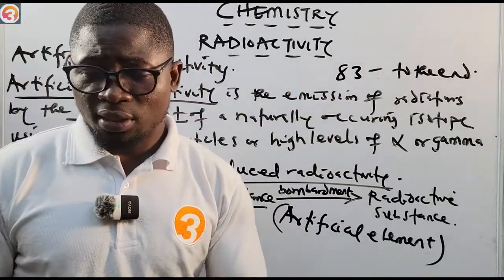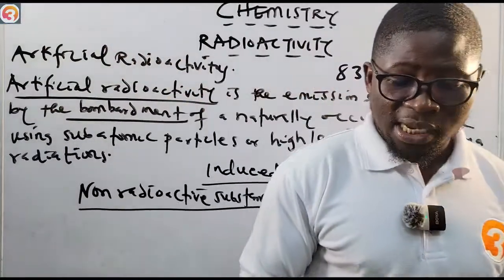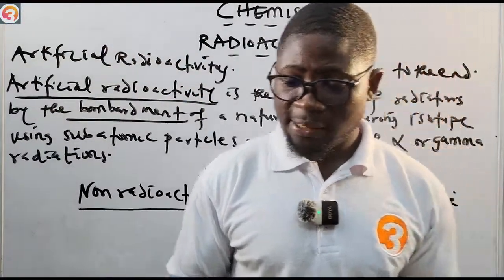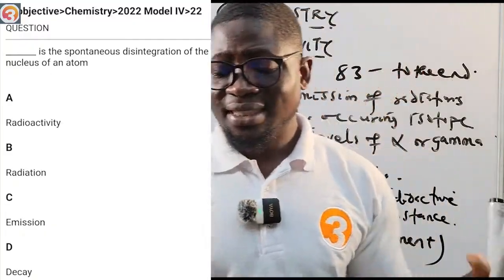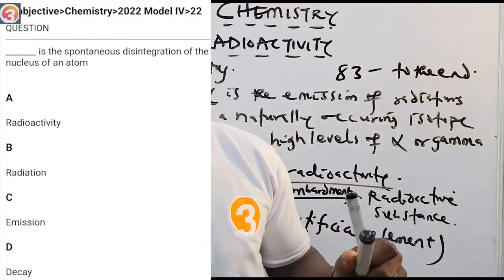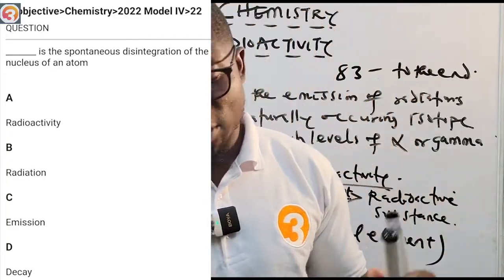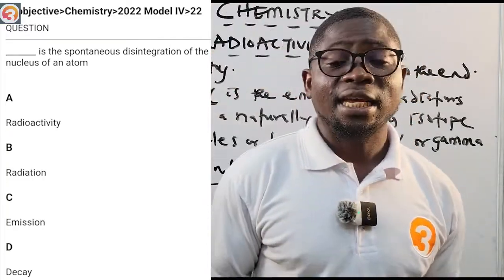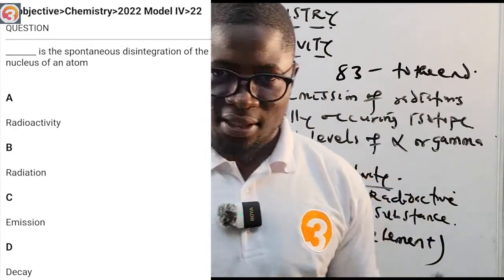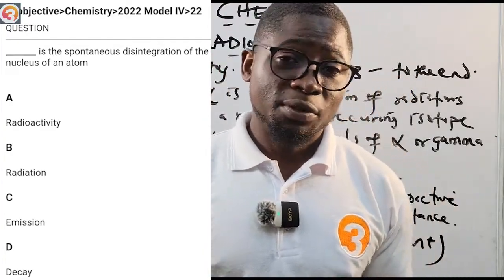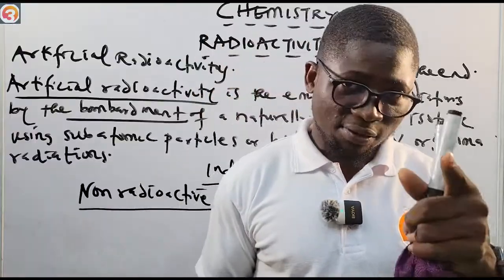Before we go, let's take a question from the app. The 2022 question number 22 says: 'Dash is the spontaneous disintegration of the nucleus of an atom.' Options: A) radioactivity, B) radiation, C) emission, D) decay. The correct answer is A — radioactivity. In the next episode, we'll start talking about the types of radiations. Thank you for watching, I will see you there.